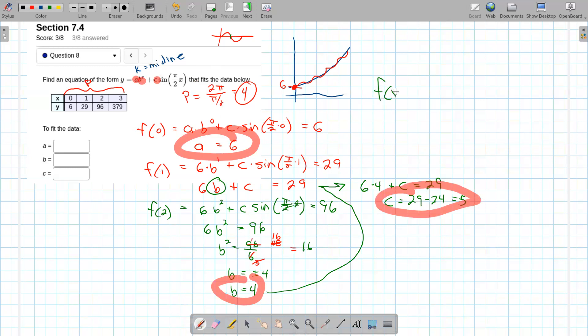So we think we've got f(x) equals a is 6 times 4 to the x plus 5 times the sine of π over 2x. There's a similar example to this in the book. You can check out also. So what happens if we plug in 3 here? What would we get? So check. What's f of 3? Better be 379.